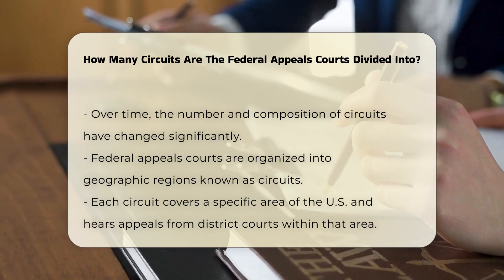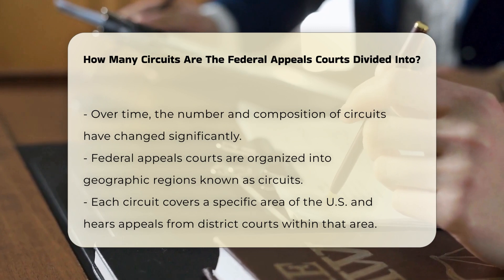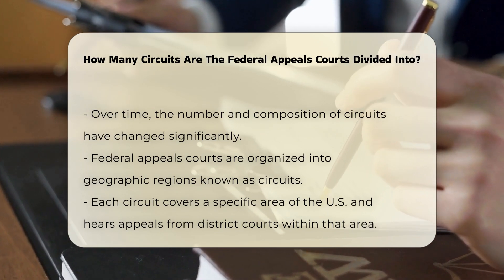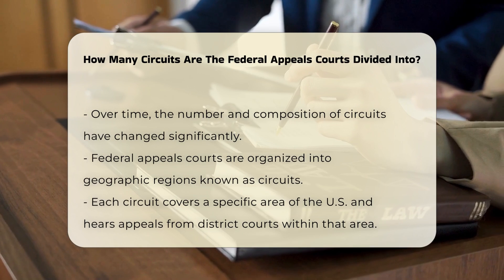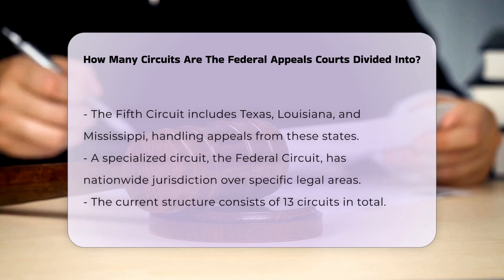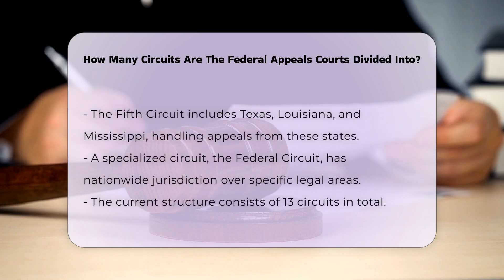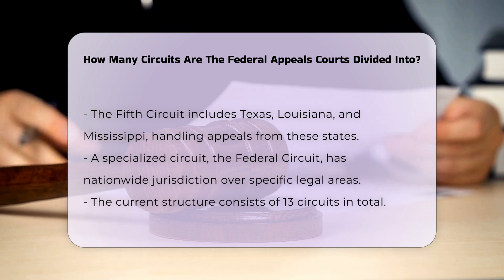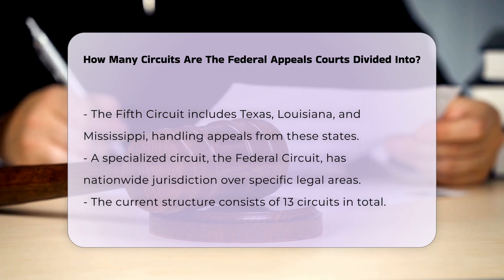Today, the federal appeals courts are organized into distinct geographic regions, known as circuits. Each circuit covers a specific area of the United States and hears appeals from the U.S. District Courts within its borders. For instance, the Fifth Circuit includes states such as Texas, Louisiana, and Mississippi, and cases from these states are appealed to the United States Court of Appeals for the Fifth Circuit.